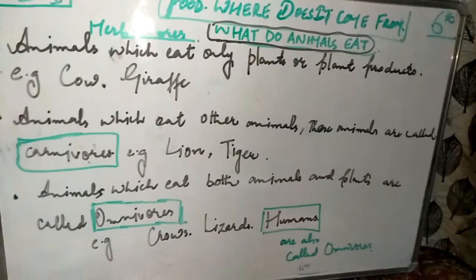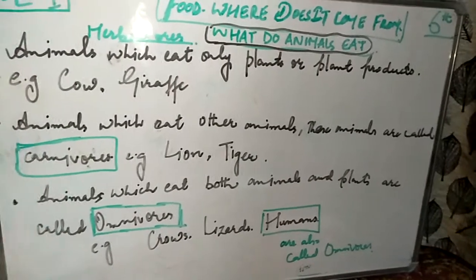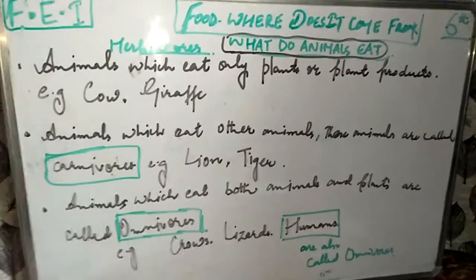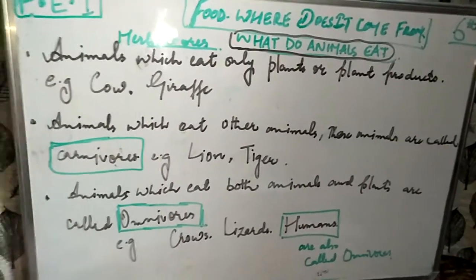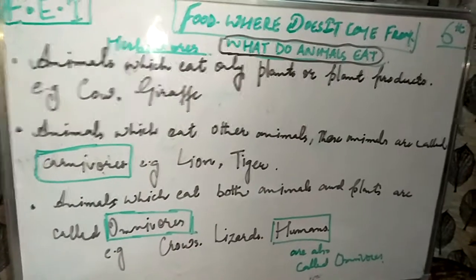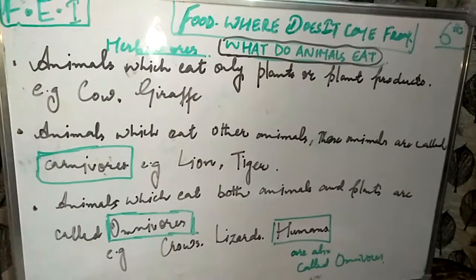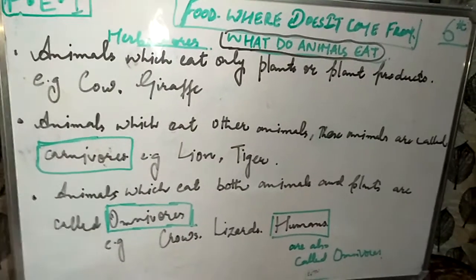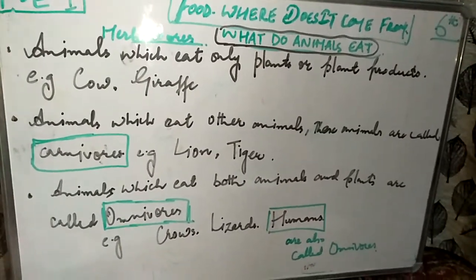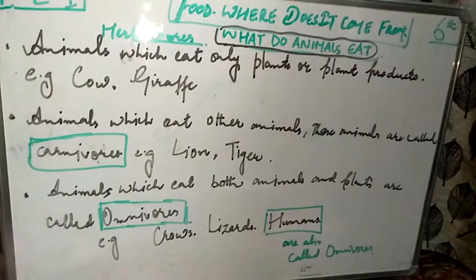Here is some extra information: humans are also omnivores. Why? Because we eat both vegetables and meat. So we are omnivores.